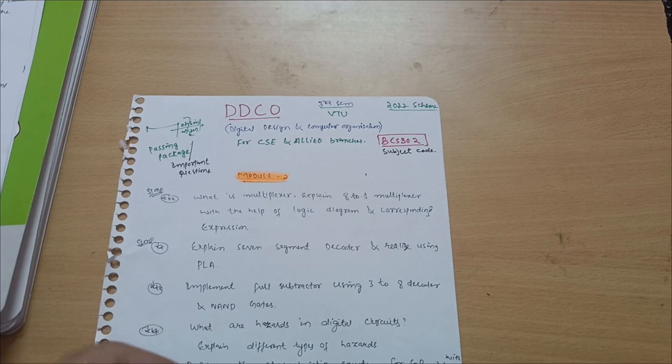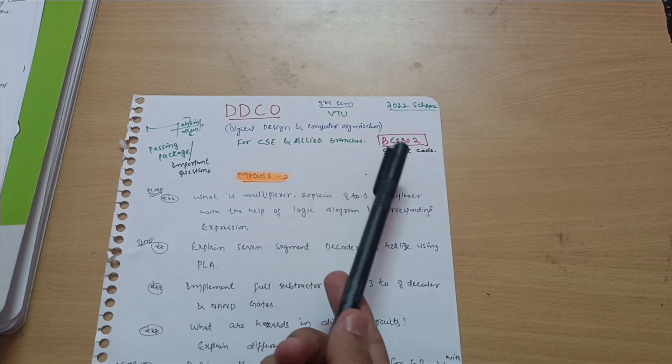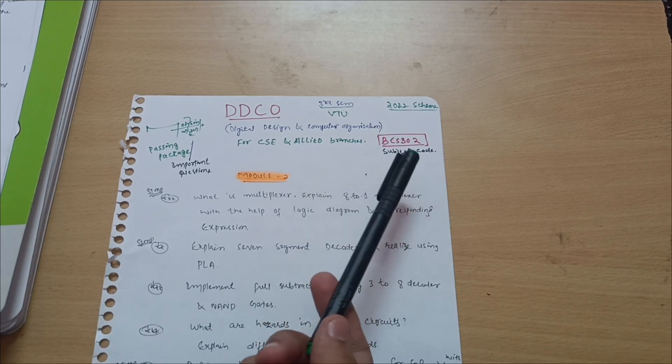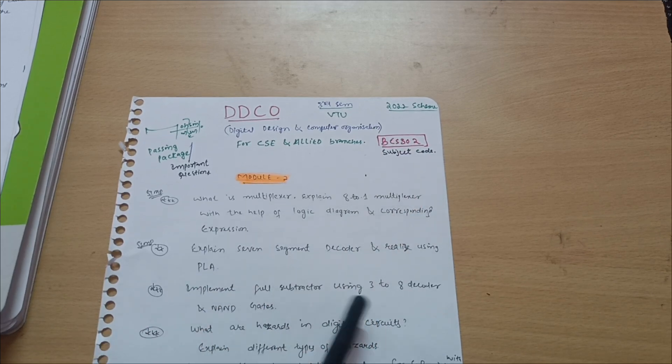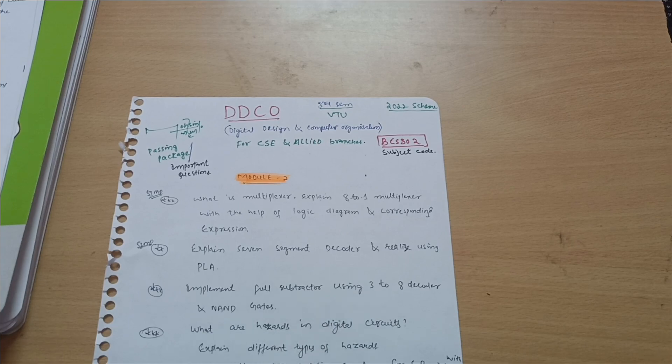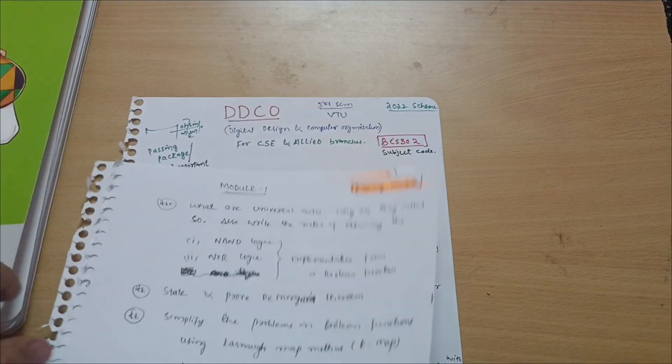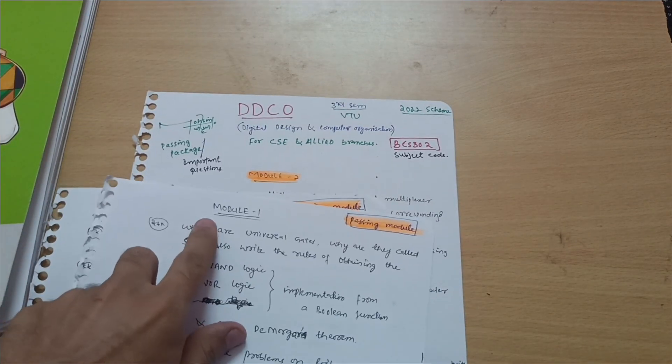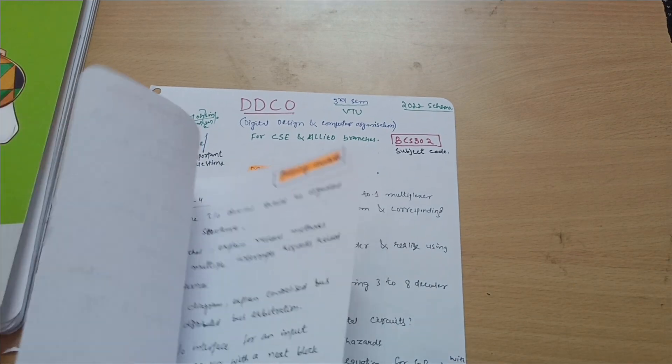Today I'm with the subject DDCO - Digital Design and Computer Organization for the third sem students. Its subject code is BCS 302. If I talk about the passing modules, in this particular subject three modules are the passing modules: module first is the passing module, and module four and module fifth.